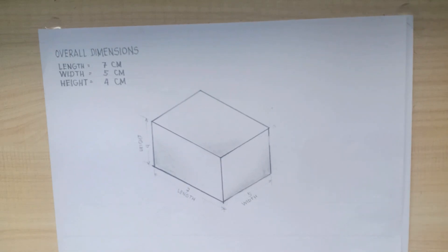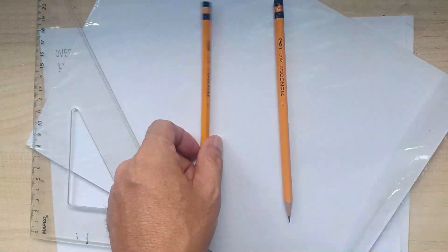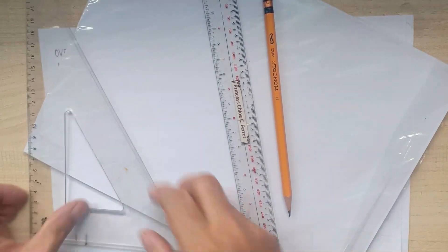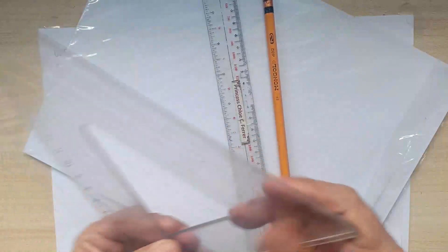Here are the procedures on how to make an isometric drawing. The first thing that we are going to do is to prepare the tools and materials that you need.